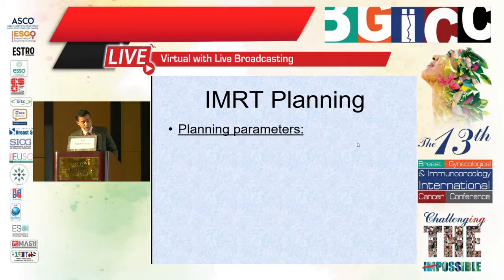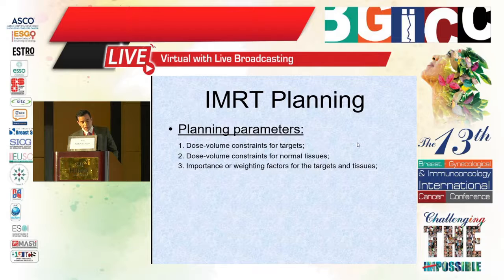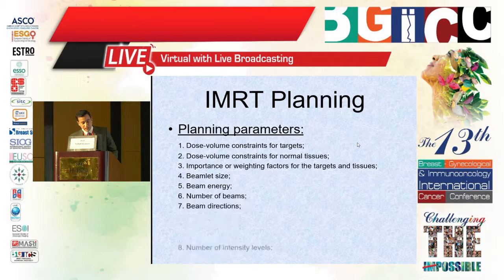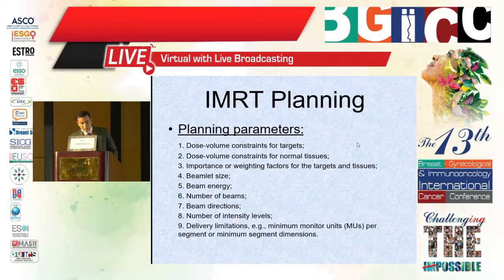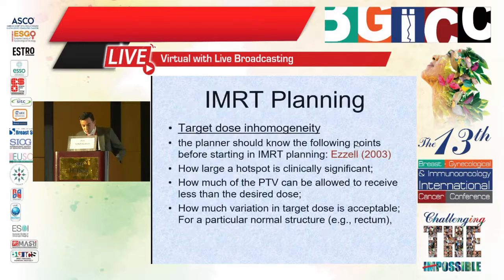Planning parameters include dose-volume constraints for target and normal tissues, importance or weighting factors for the targets and tissues, beamlet size which controls the number of beamlets, beam energy, number of beams, beam directions, and number of intensity levels. Delivering limitations include minimum monitor units per segment and minimum segment dimensions.